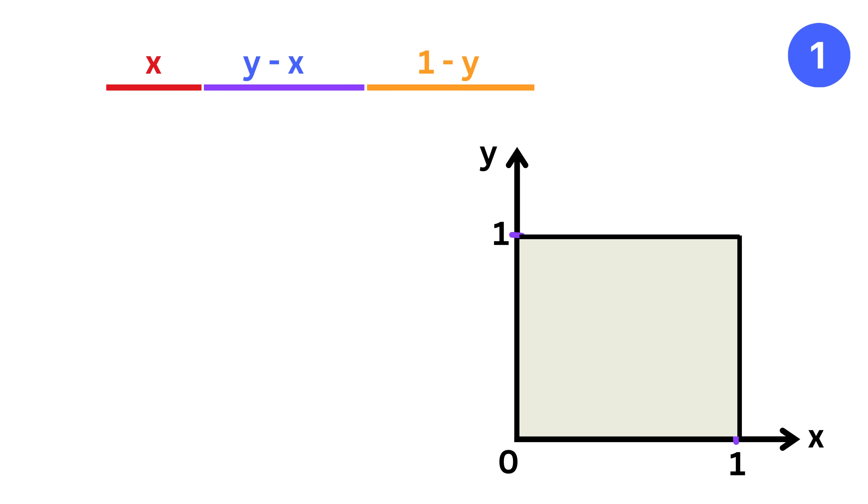Now here comes the magic. We know using triangle inequality that for three pieces of lengths a, b, and c to form a triangle, the sum of any two pieces must be greater than the third.